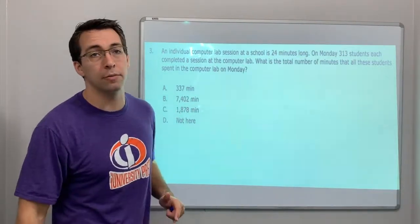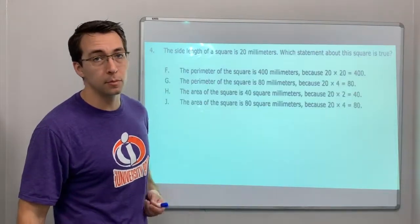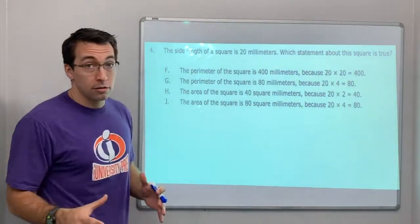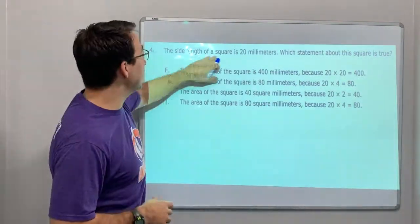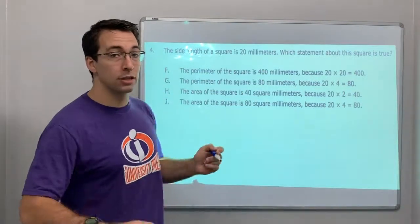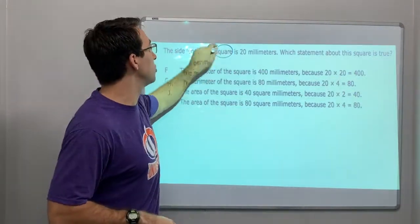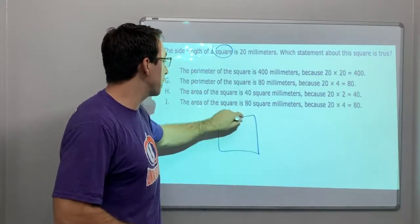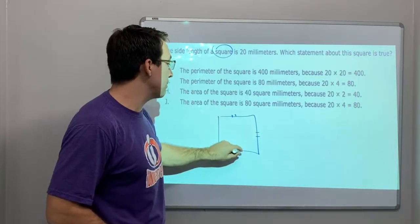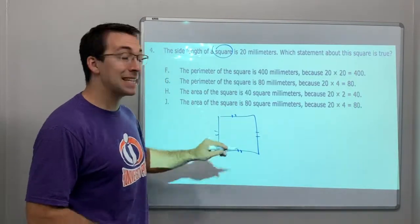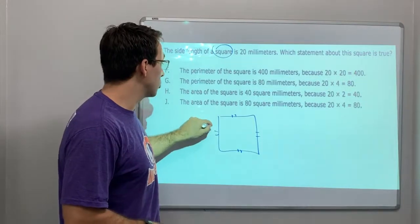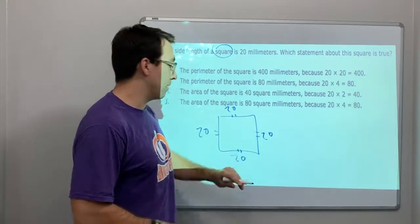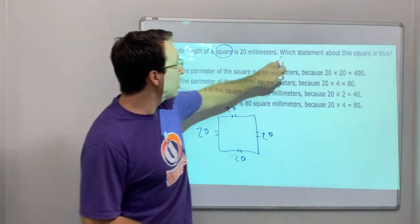Watch the video, watch my mistake, and see how I caught it — I want you guys to learn from that. Number four: the side length of a square is 20 millimeters. This is huge — we've got to know what a square is. A square has four equal sides; every side is the exact same length, so 20, 20, 20, 20.